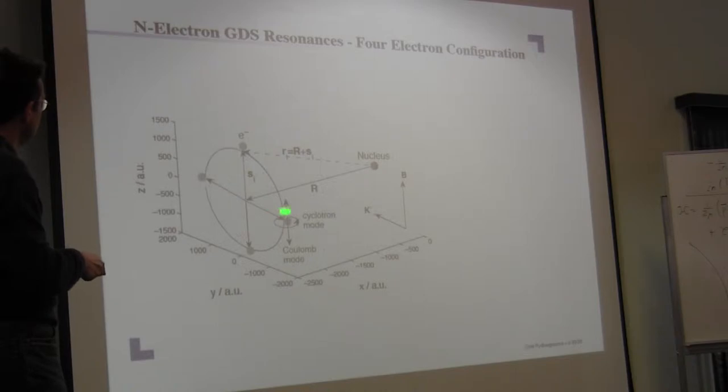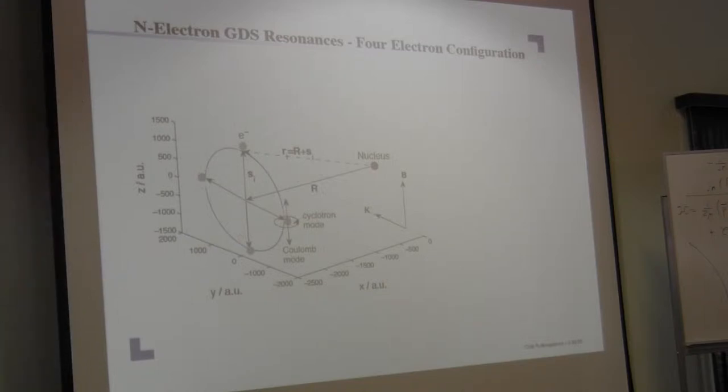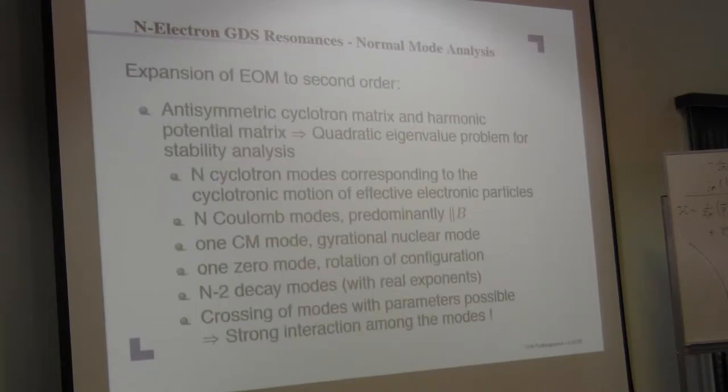They have the zero mode again. They have cyclotron modes transversal to the field. They have Coulomb modes along the field and they are of course a multi-dimensional vibrational problem. But compared to the case of two particles there's also for more than two particles a third degree of instability.